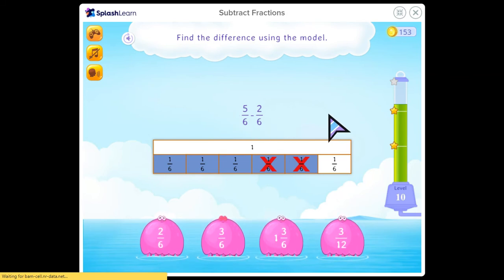5 minus 2 is 3. So the answer is 3 sixths. You can count that up here too. Denominator stays the same. Count up the 1s. 3 sixths. I know that's for a fact.